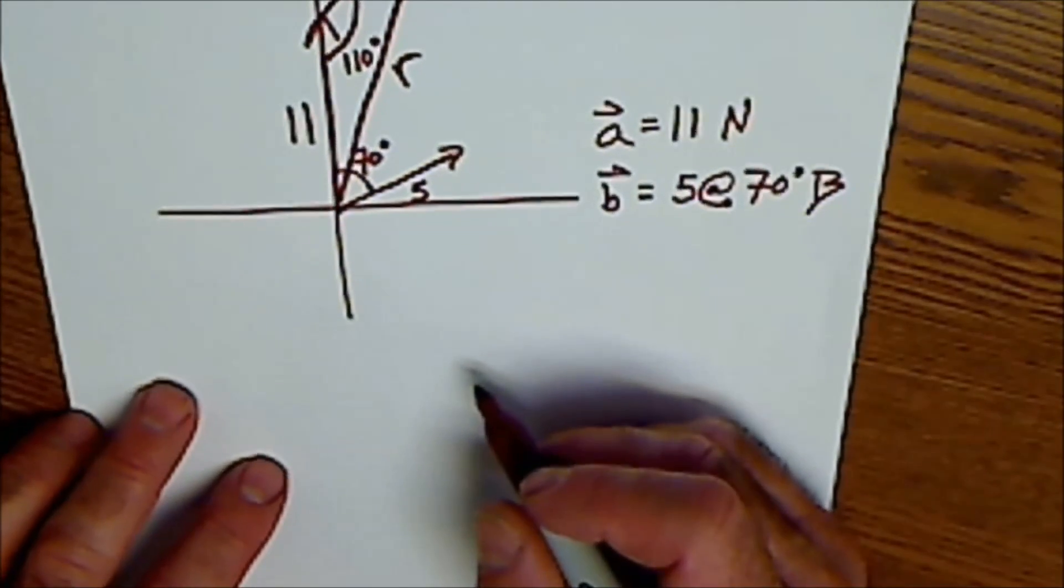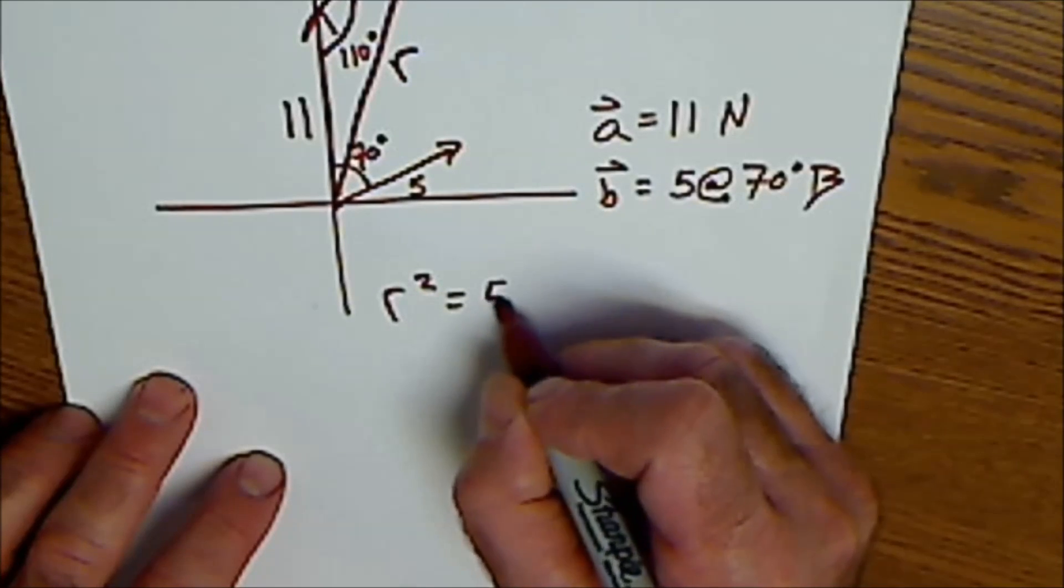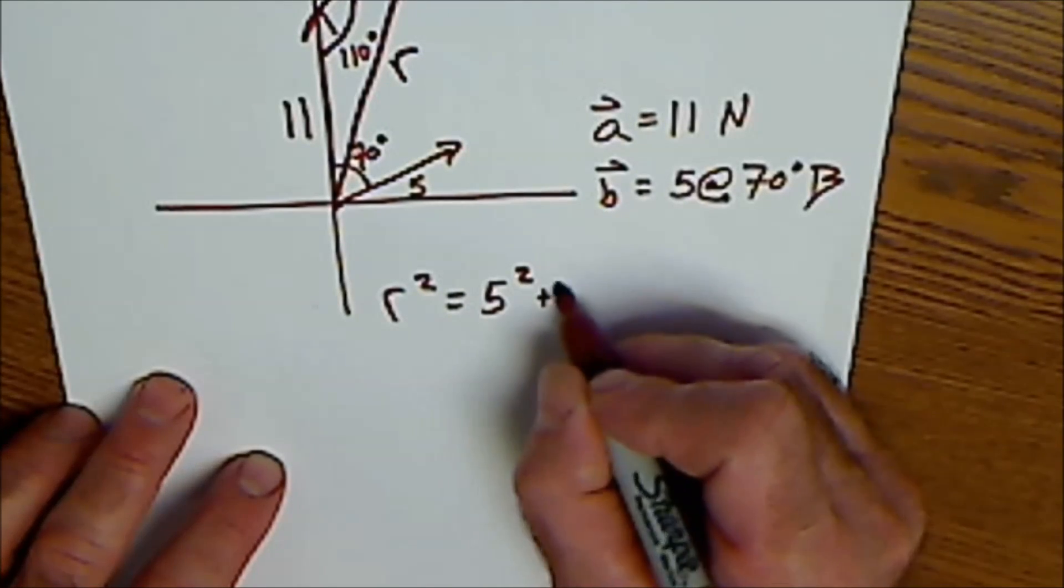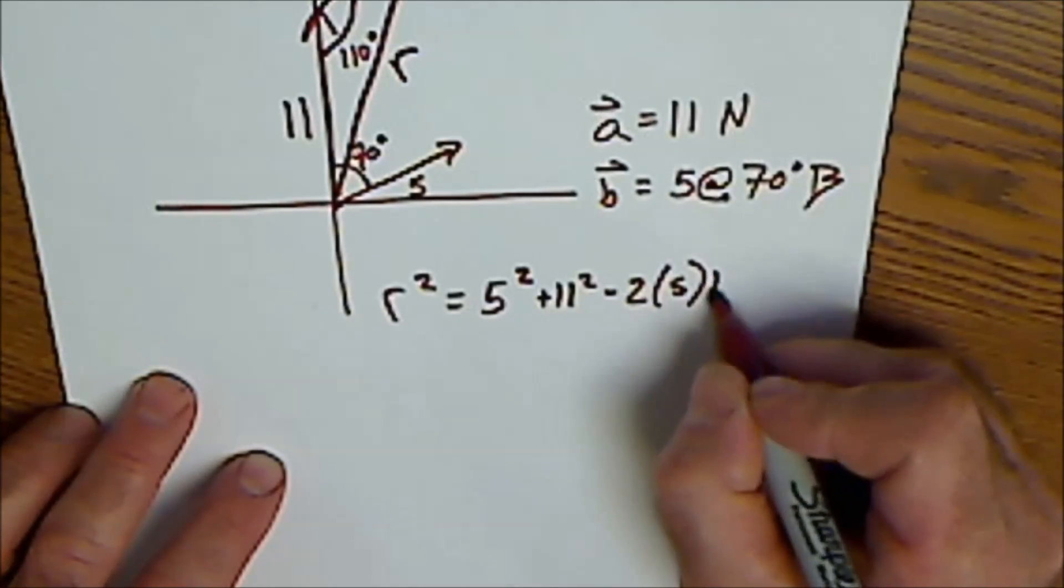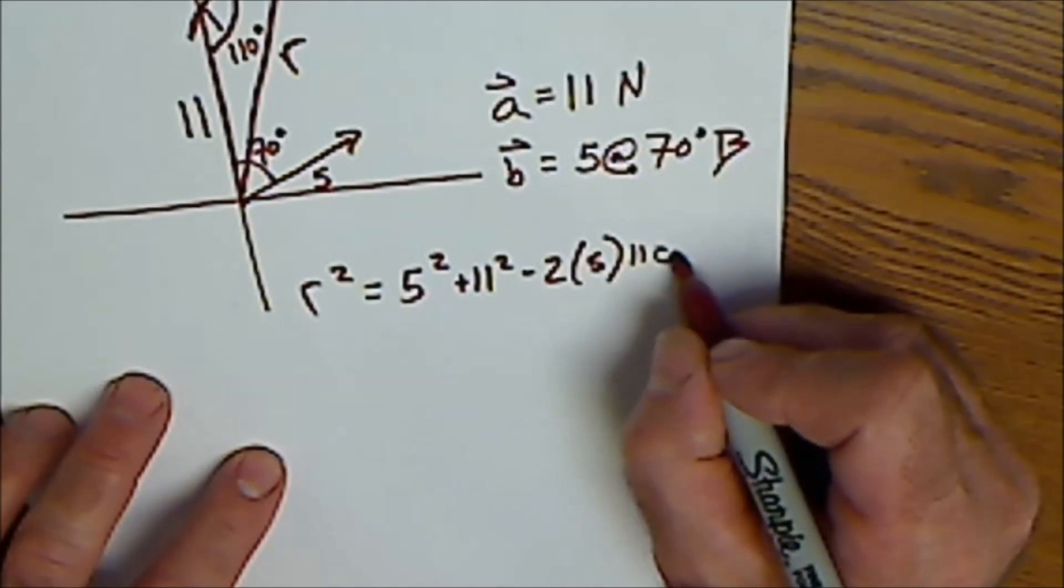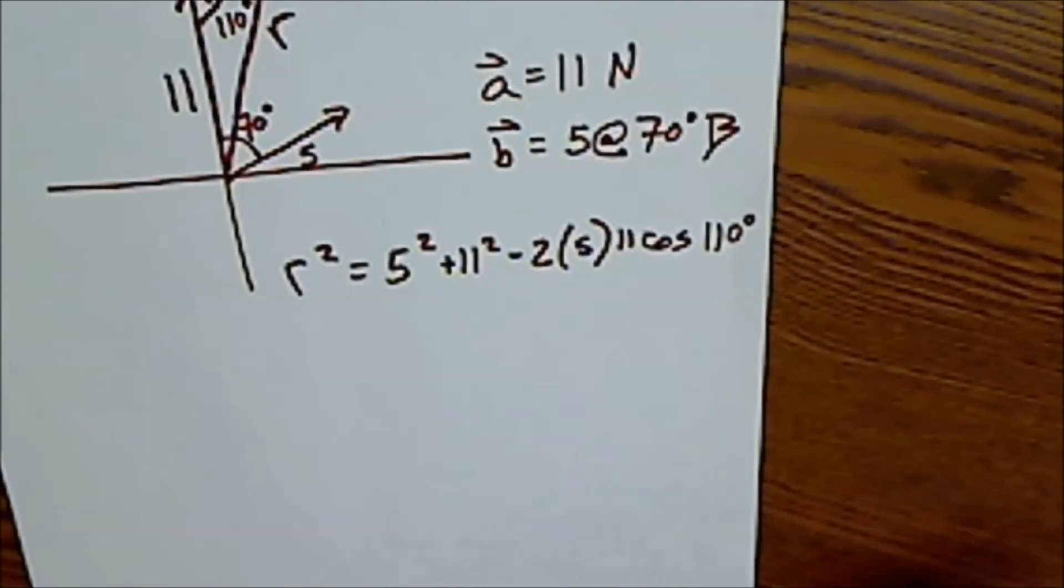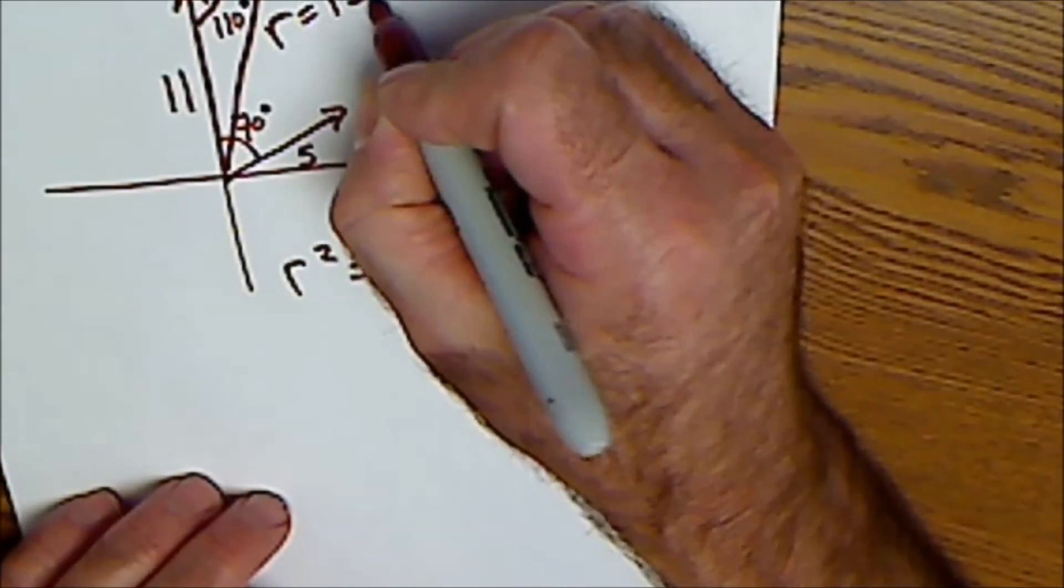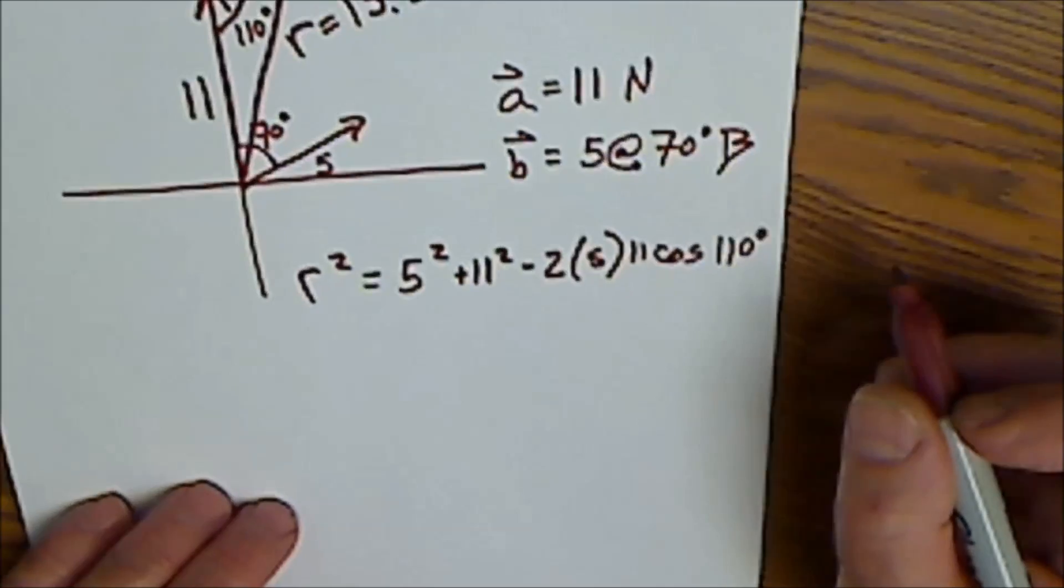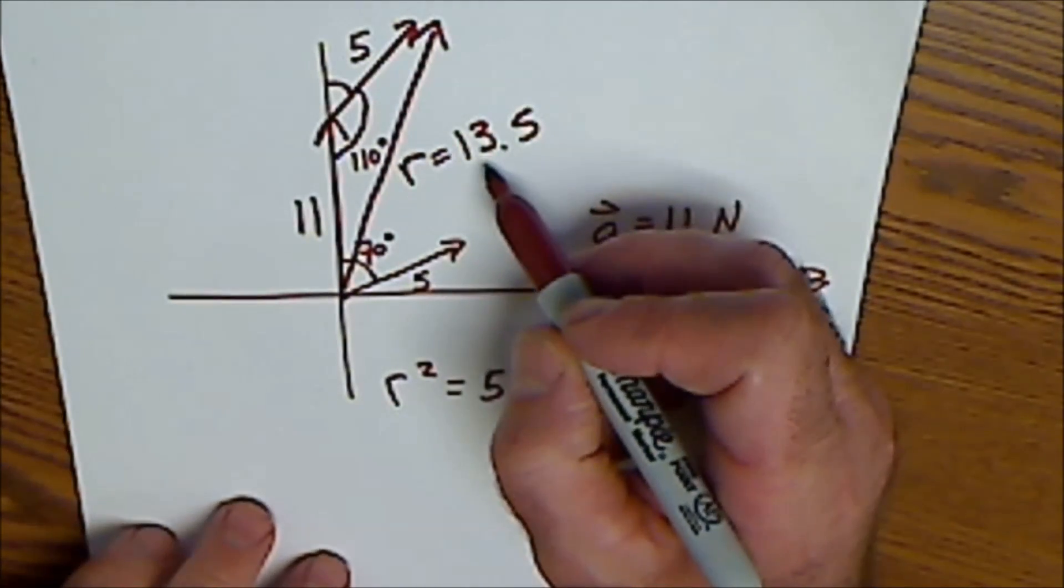So then I'm going to use the law of cosines. R squared equals 5 squared plus 11 squared minus 2 times 5 times 11 cosine of the angle opposite R, cosine of 110 degrees. So the square root of that is 13.5. So this length right here is 13.5. Does that even look right? Largest angle, longest side.